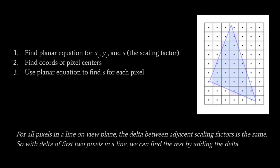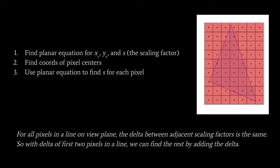We're still paying the cost of finding the equation of a plane, and there's a bit of work finding the pixel centers on the viewplane grid, though that's fairly trivial. We find the scaling factors for at least four pixel centers, get the deltas, and fill in the rest. Once we have the scaling factors for every pixel and know their viewplane coordinates, for each pixel we take the X and Y of the viewplane, divide both by the scaling factor, and get the corresponding point on the 3D triangle.